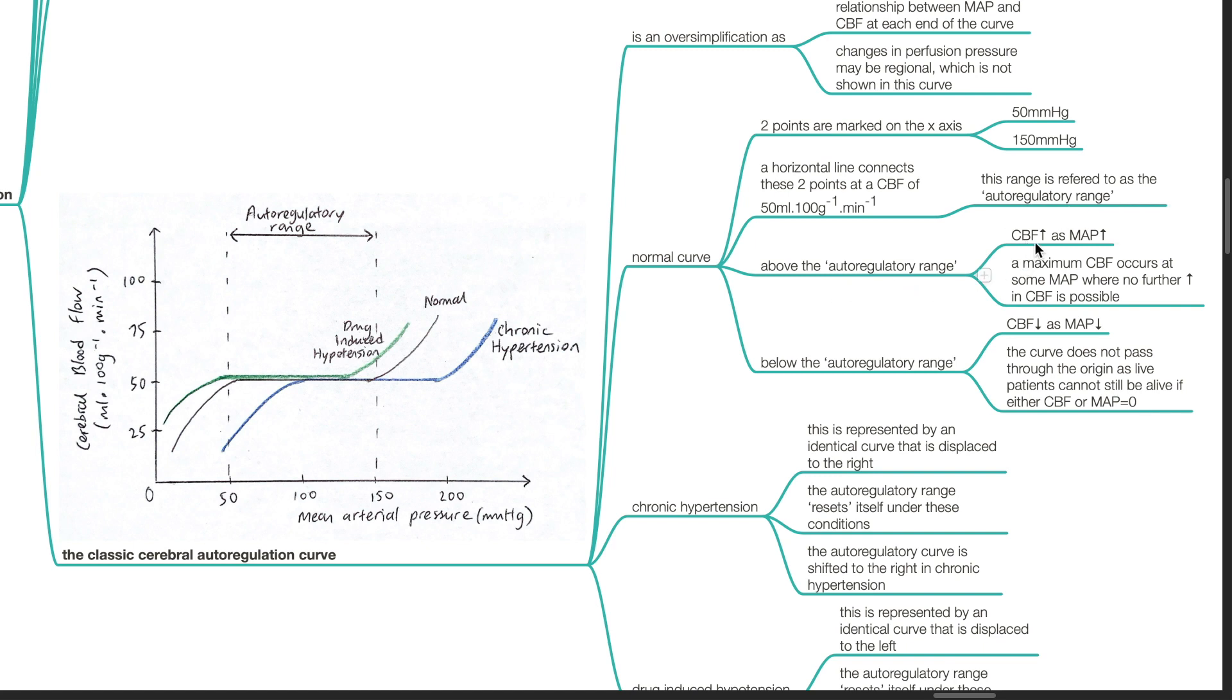Above the autoregulatory range, CBF increases as MAP increases. A maximum CBF occurs at some MAP where no further increase in CBF is possible. Below the autoregulatory range, CBF decreases as MAP decreases. The curve does not pass through the origin as live patients cannot still be alive if either CBF or MAP is zero.